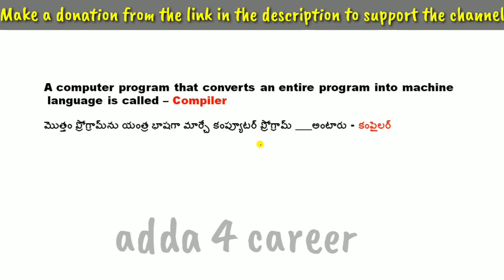A computer program that converts an entire program into machine language is called a compiler. The entire program is converted to machine language by a compiler.